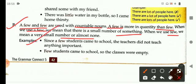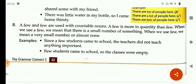Since a few students came to school, the teacher did not teach anything important. Here, it is showing you a few, small in number. A few students came to school. So the classes were empty. Here, few means very small in number, almost none.